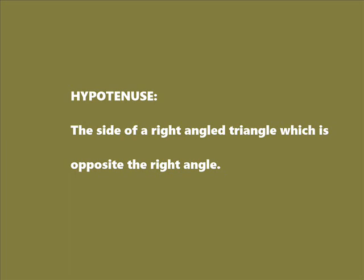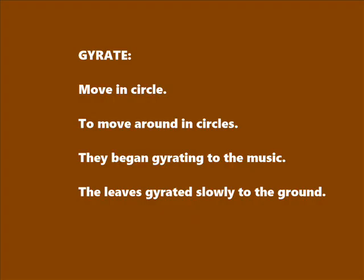Hypotenuse. H-Y-P-O-T-E-N-U-S-E. Similar word: the side of a right-angled triangle which is opposite the right angle.